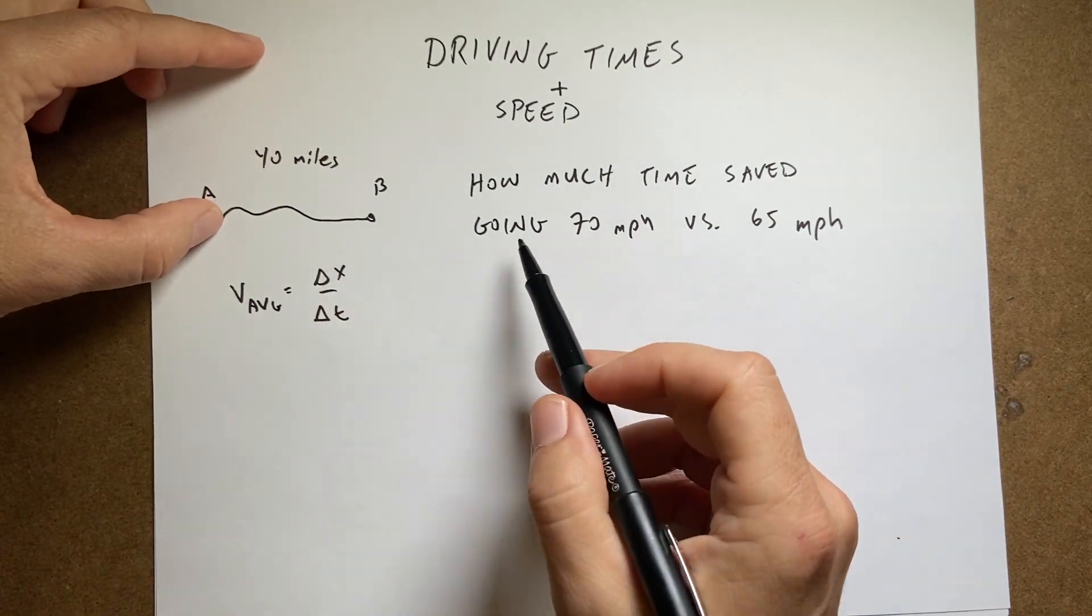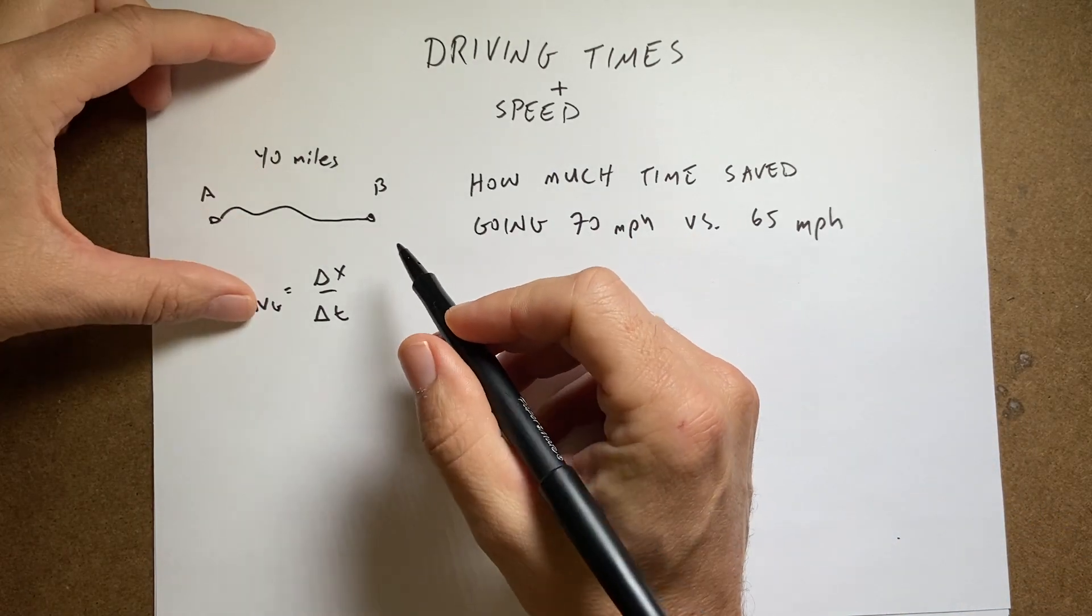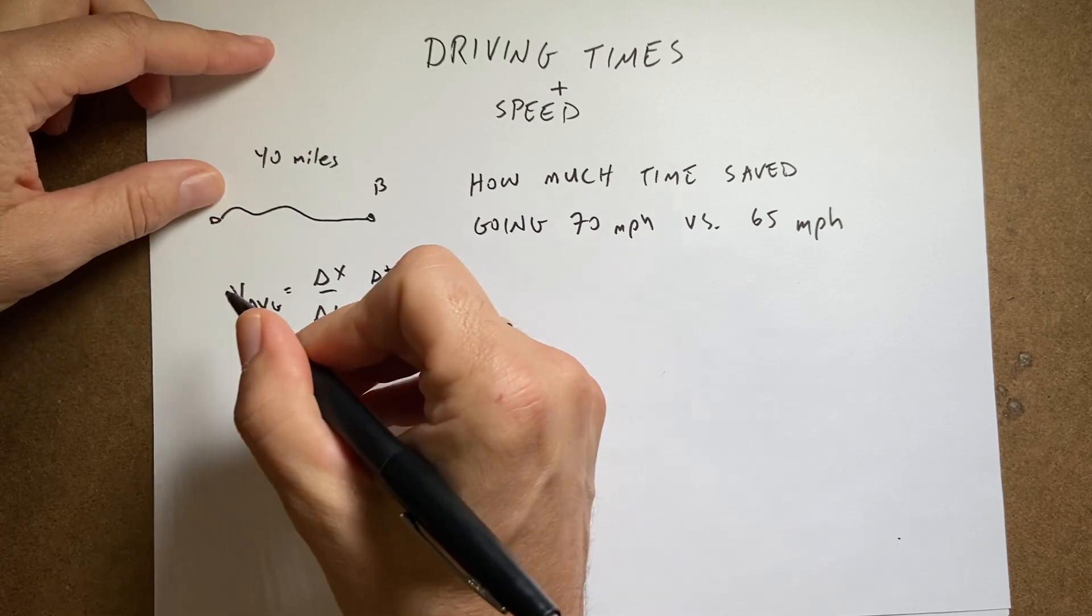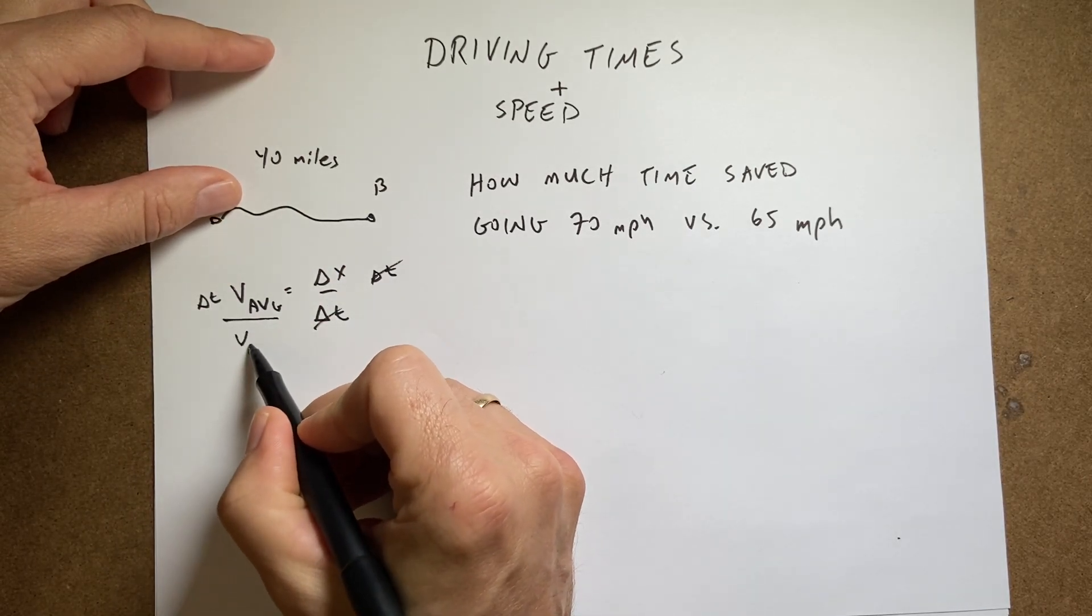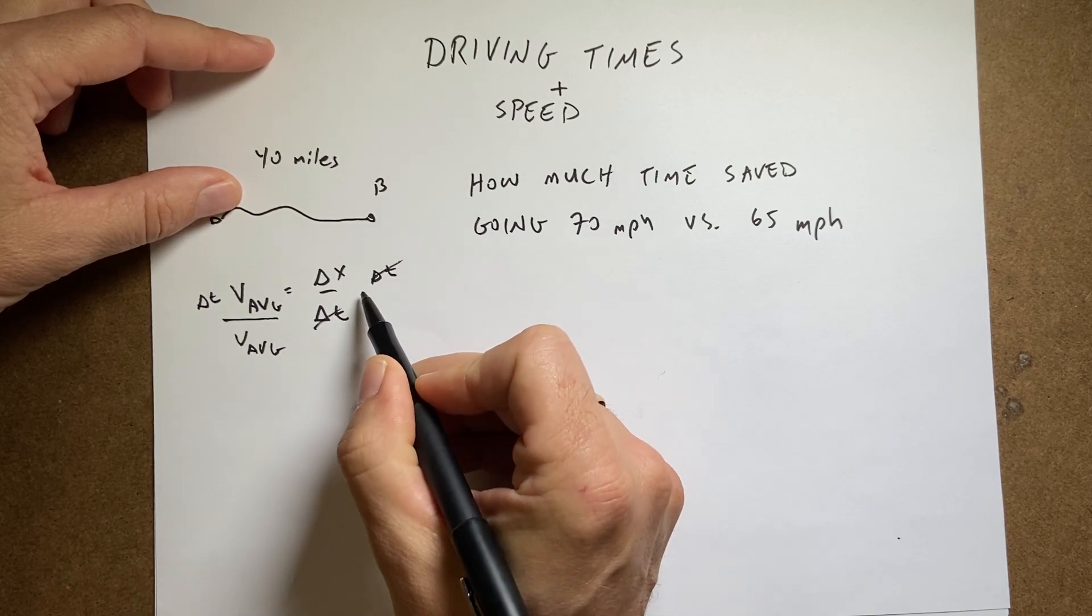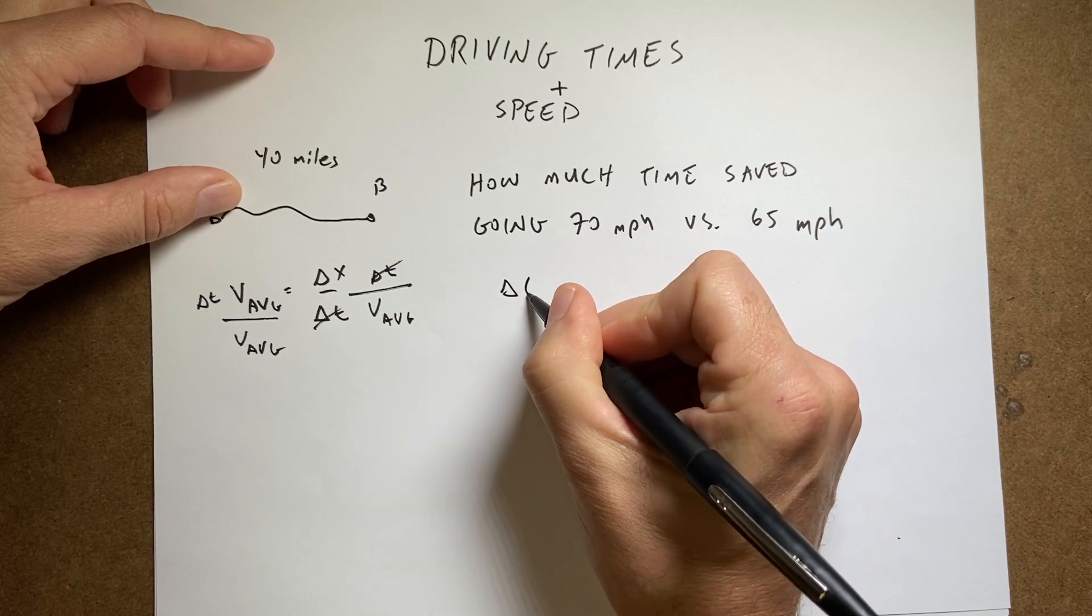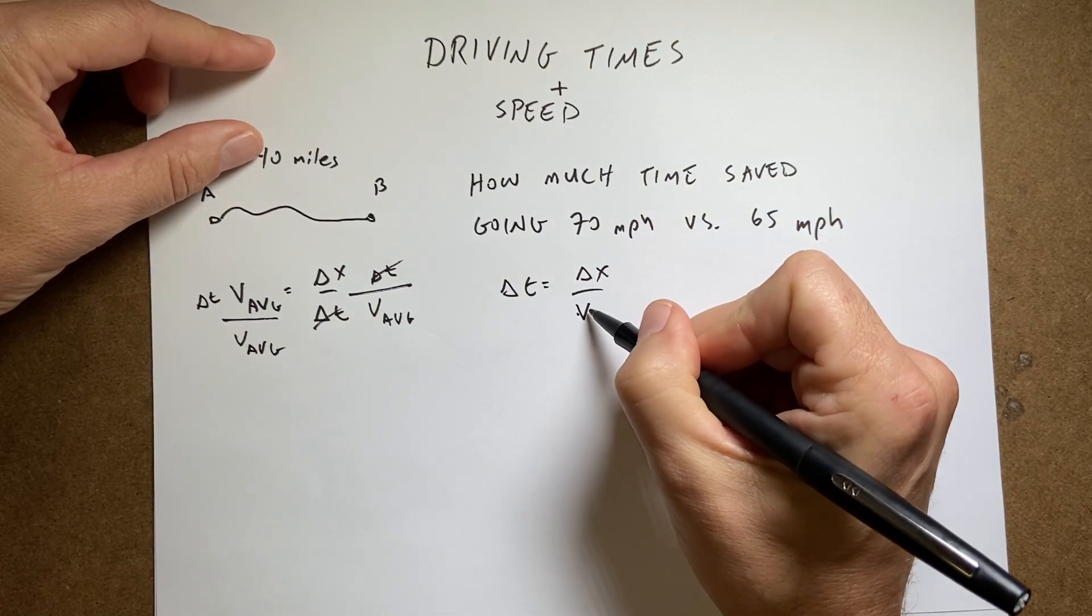So let's first find out how long it takes to get there going 65. So I want to solve for delta t. So if I multiply both sides by delta t, these cancel, and then I can divide both sides by V average. Then I get delta t equals delta x over V average.